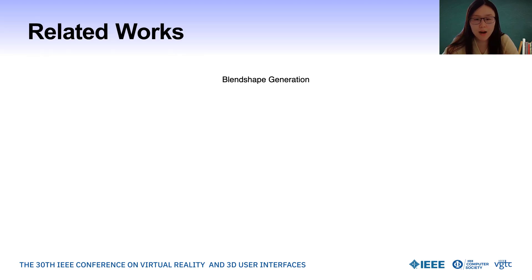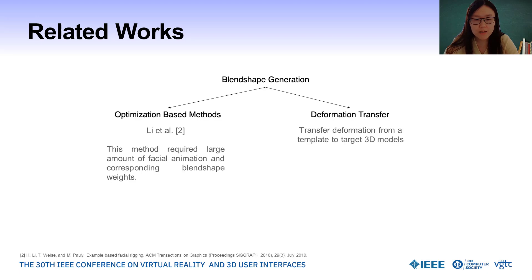Let's look at the detailed state-of-the-art of previous work and the highlights of our work. Previous work has discussed approaches to blend shape generation. One classic method was proposed by Li, which used a two-step optimization method to obtain blend shapes on avatars. However, these methods require large datasets of animation with labeled blend shape weights, which are not easy to obtain. Alternatively, another approach utilizes the power of deformation transfer.